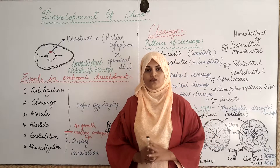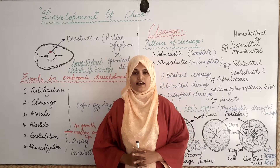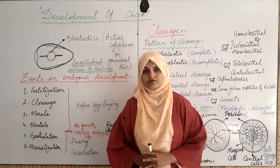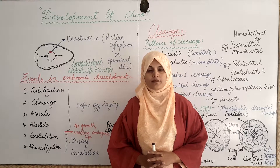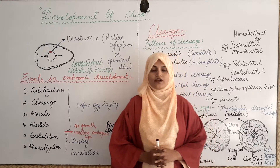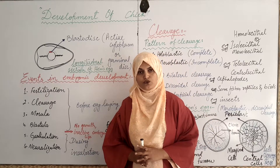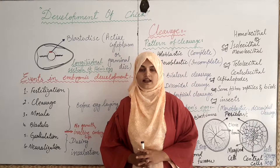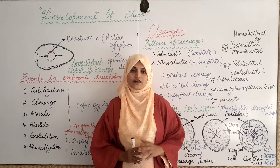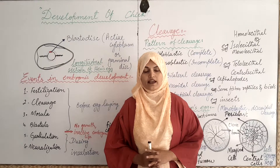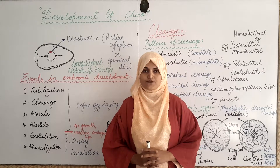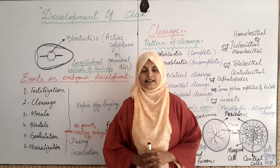The egg of hen is formed by the process of oogenesis in the female reproductive organ which is termed as ovary. The egg is released from the ovary in the form of a secondary oocyte. This secondary oocyte, when released into the oviduct, further undergoes meiotic cell division, in the result of which two polar bodies are formed, which later on degenerate.